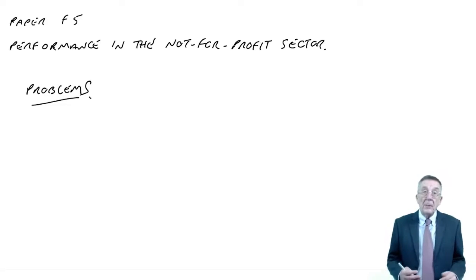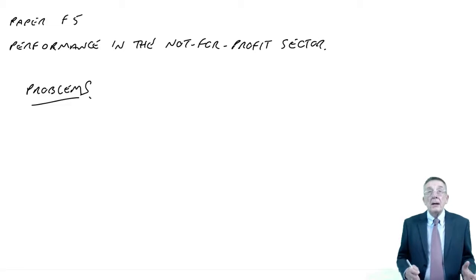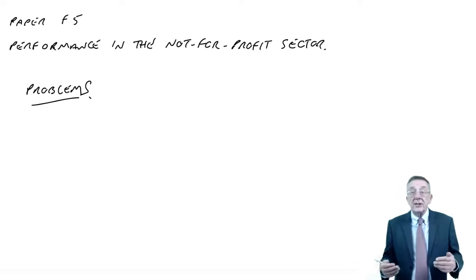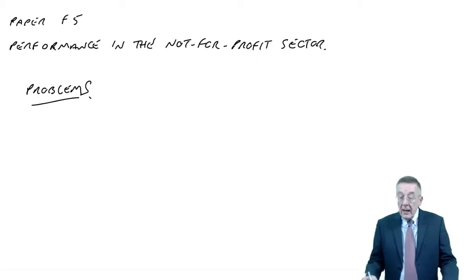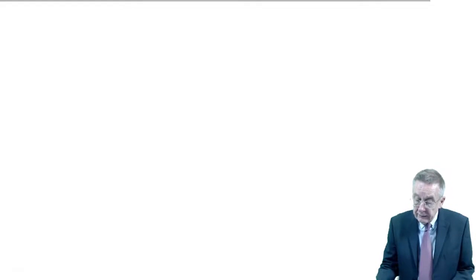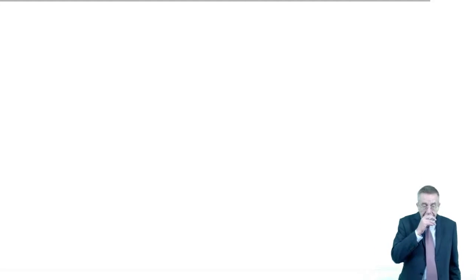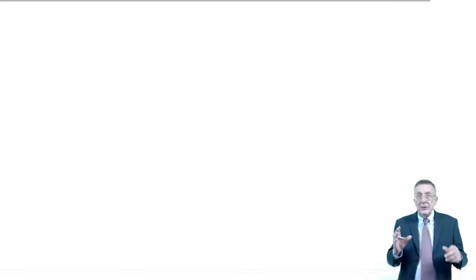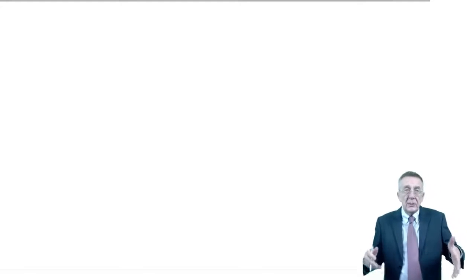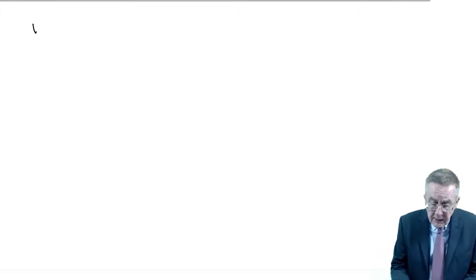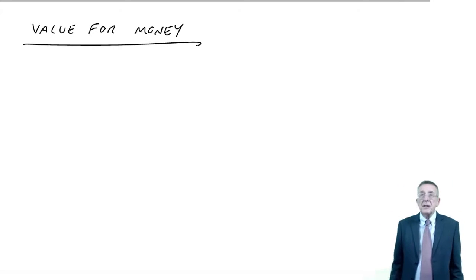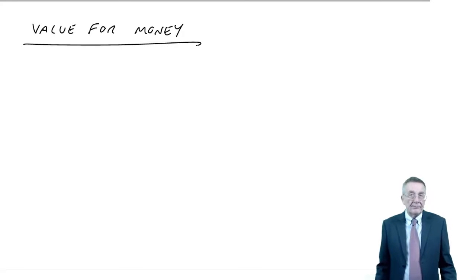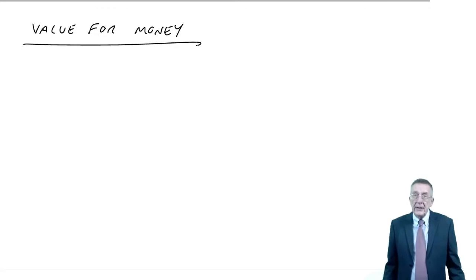That's one bit - be able to talk about the problems, because if you do get a question on this, certainly in Section C, there stands to be a fair amount of writing, and it could be simply talking about the problems. We want to find ways of measuring how well our hospital is doing, because we want to make sure the state gets value for money. The state's putting a lot of money into hospitals and they want to make sure the money's being used well, which is why we need performance measures.